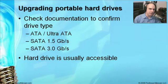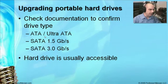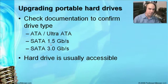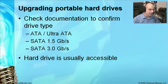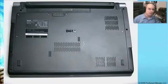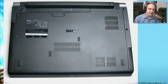When upgrading hard drives in laptops, the drive types may differ depending on the laptop. The drives are the same types as desktops — just smaller form factors. Options include ATA, Ultra ATA, SATA at 1.5 gigabit, and SATA at 3.0 gigabit. The hard drive is usually accessible from the side and pops right out. Some technicians have multiple drives they slide in and out. If it slides out from the side, replacement is straightforward — pull it out, put the new one in, and slide it back.